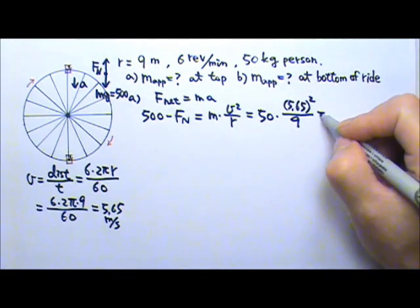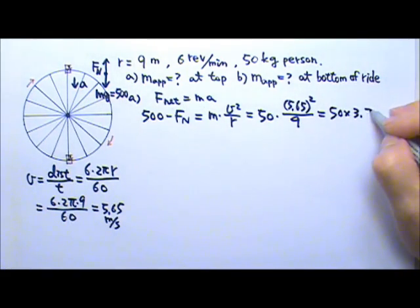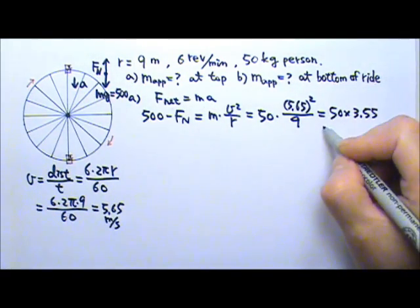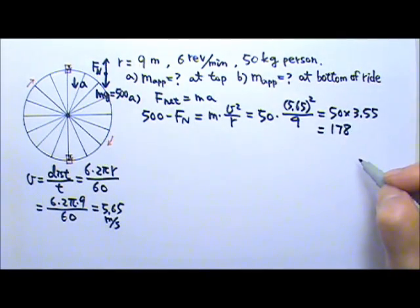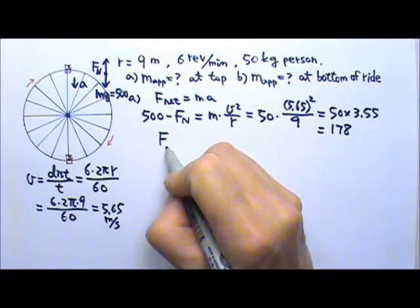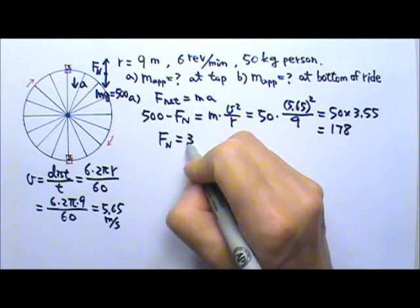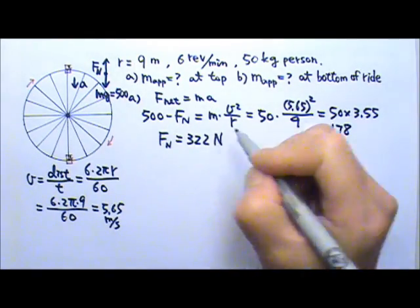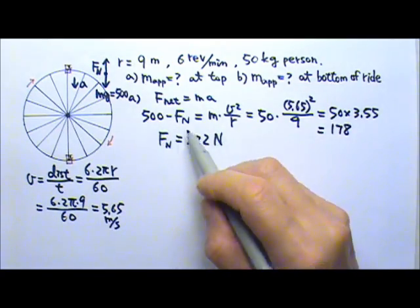And so this gives us 50 times 3.55, and this gives us 178 newtons. And what we're looking for is the normal force first. So normal force, it's going to turn out to be 322 newtons. Now this will be the apparent weight.